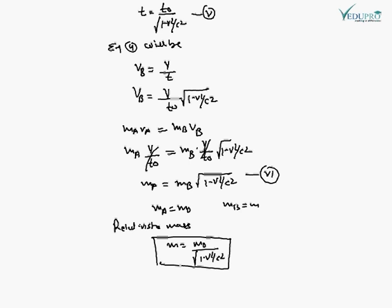This is the formula for variation of mass with its velocity. When we plot the graph of M upon M0 versus V upon C, the graph will be like this. The x-axis is V upon C with values 0, 0.5, and 1, and the y-axis is M upon M0 with values 5 and 10. This proves that when velocity varies, mass also varies. This equation is very important to relativistic mechanics.